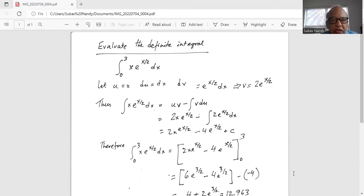So vdu, v is 2e to the x by 2 and du is dx. So this is 2x times e raised to the power of x by 2 minus, again, the integration of e to the x by 2 is half in the denominator, which makes 2 in the numerator.